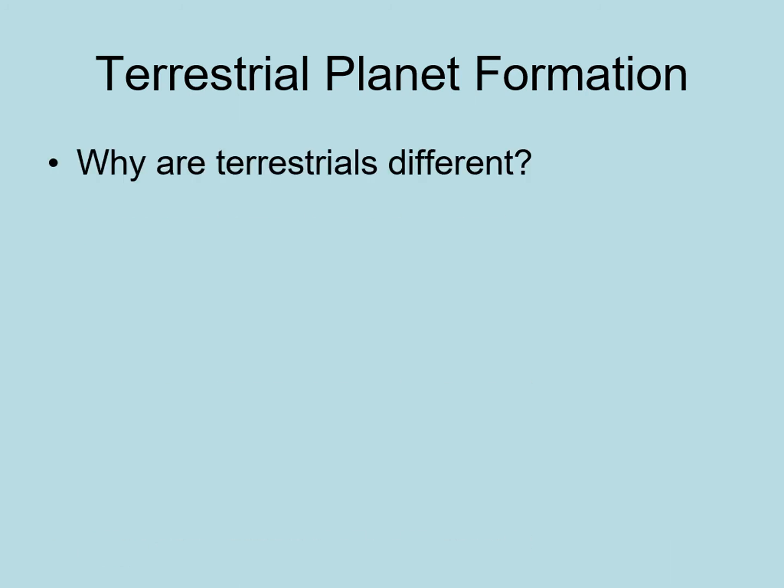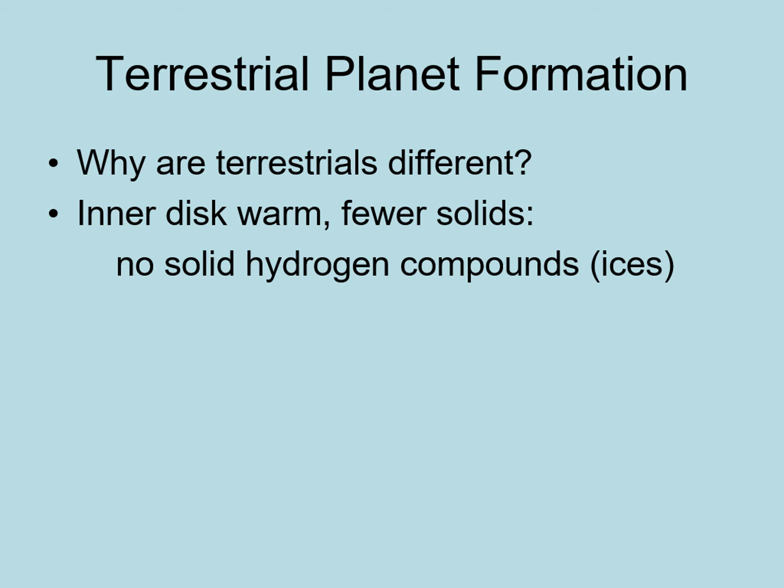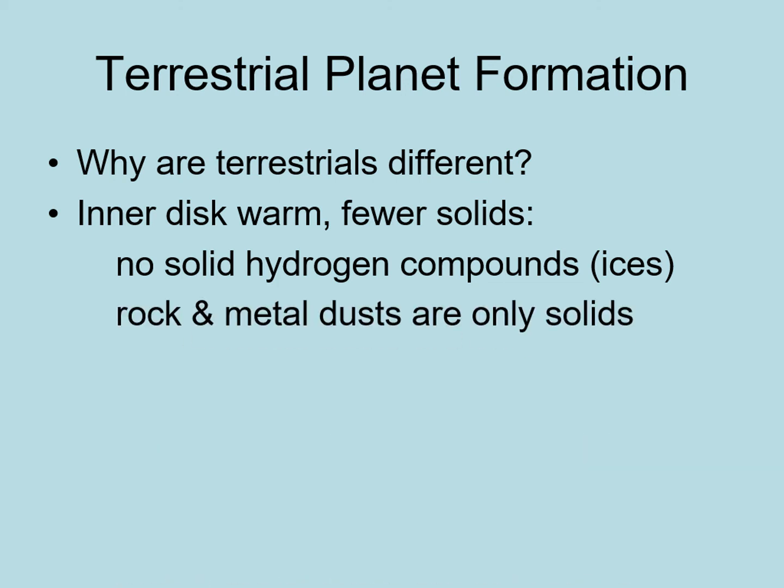We've just described the formation of Jovian planets and their moons. To understand what's different about terrestrial planets, we need to return to the condensation process and look at how it's different in the inner solar system. The main difference between the inner and outer solar systems is temperature — it's a lot warmer in the inner solar system. And that takes away one of the three main components of solid body accretion: hydrogen compounds. When it's warm, things like ice don't freeze, so there won't be any water ice available when solid body accretion happens in the inner solar system.